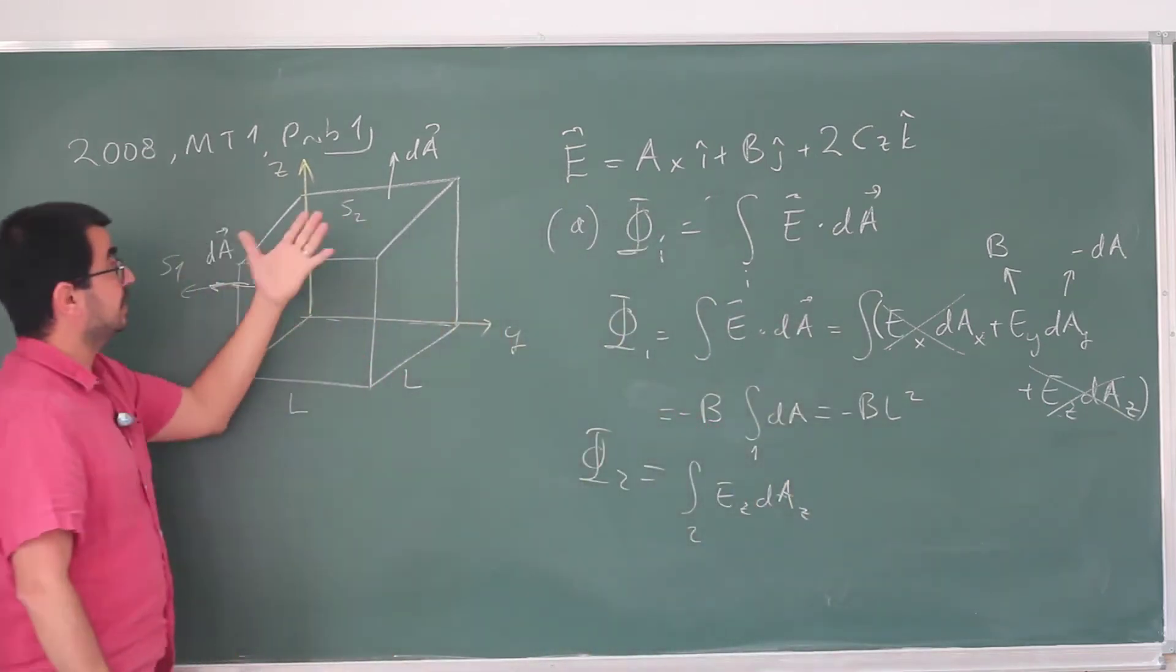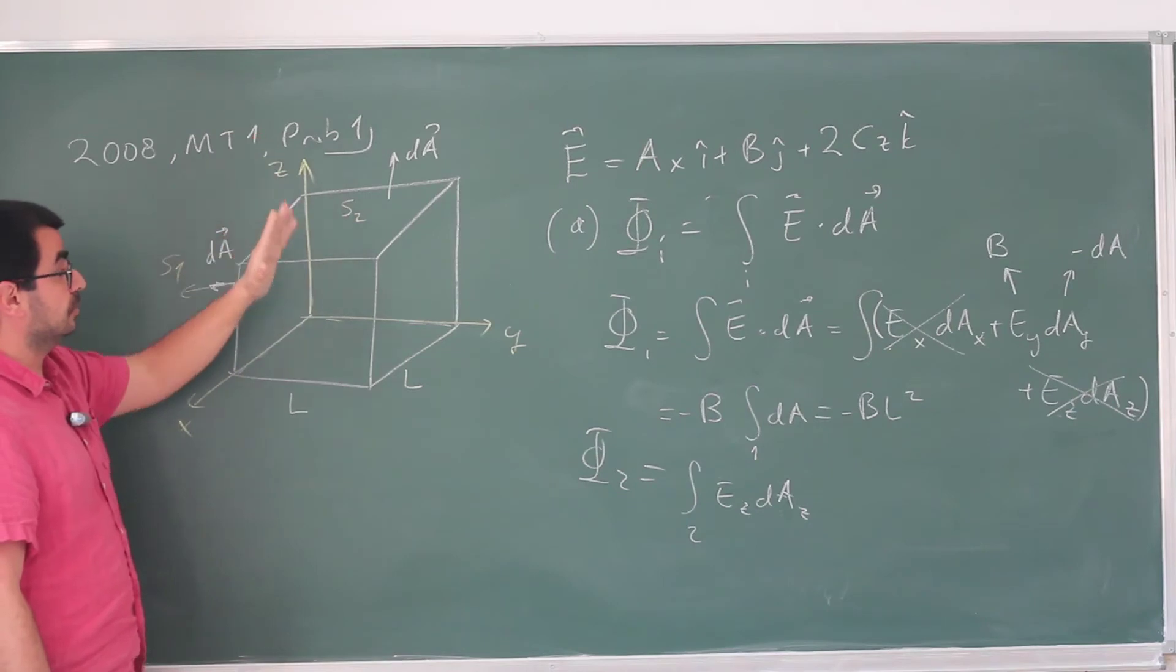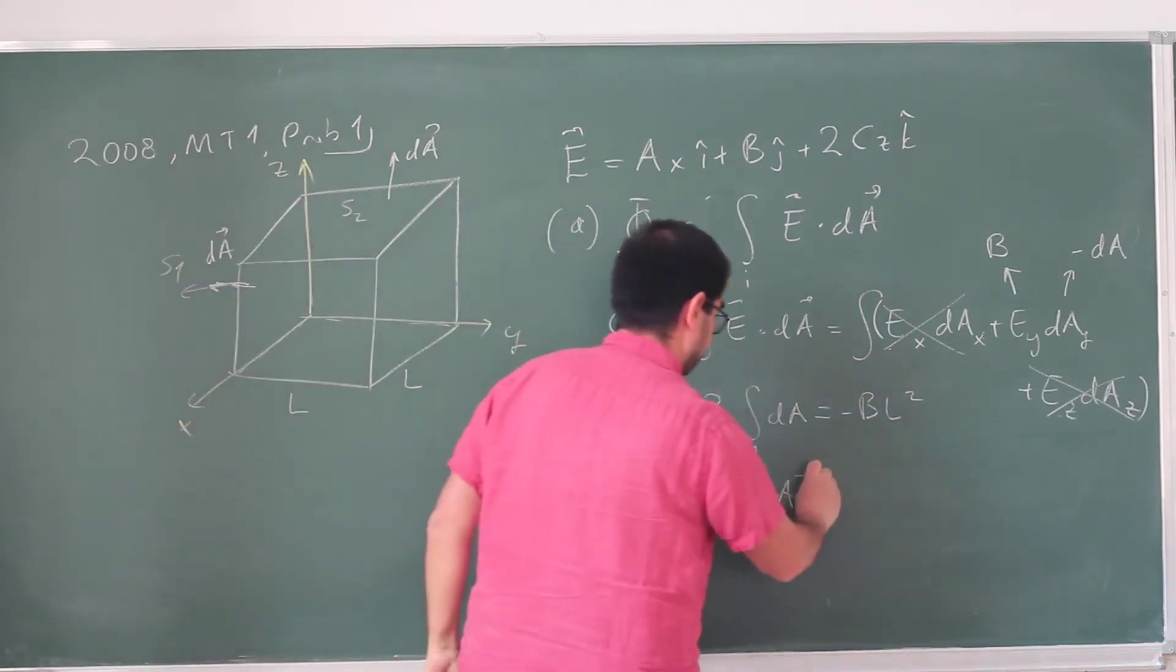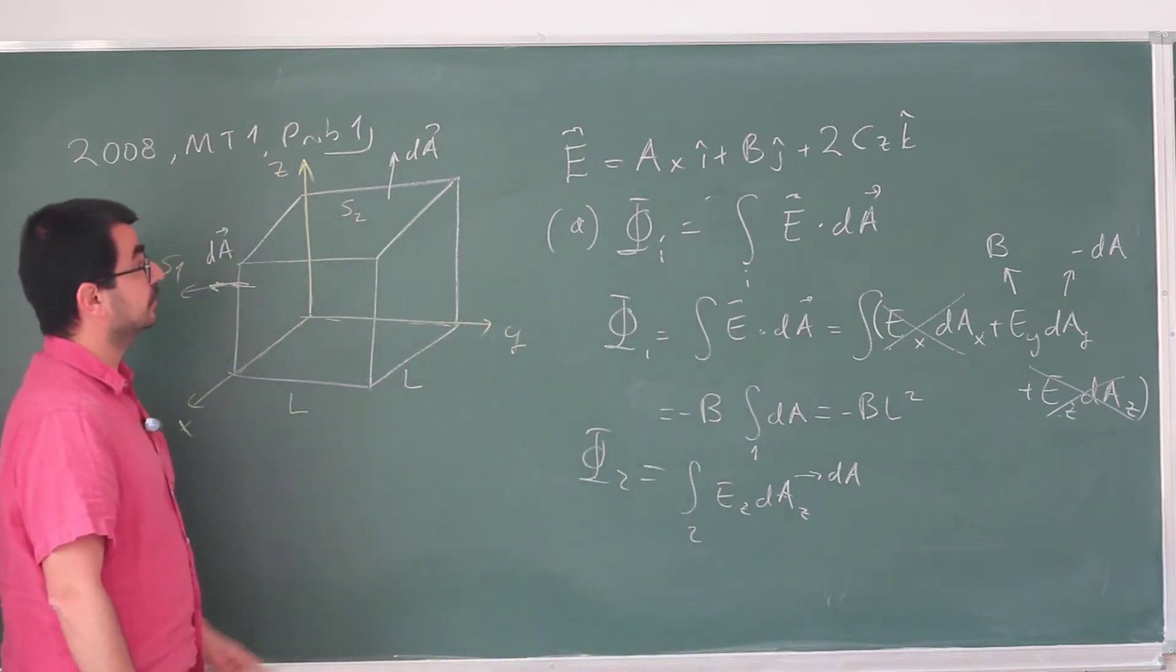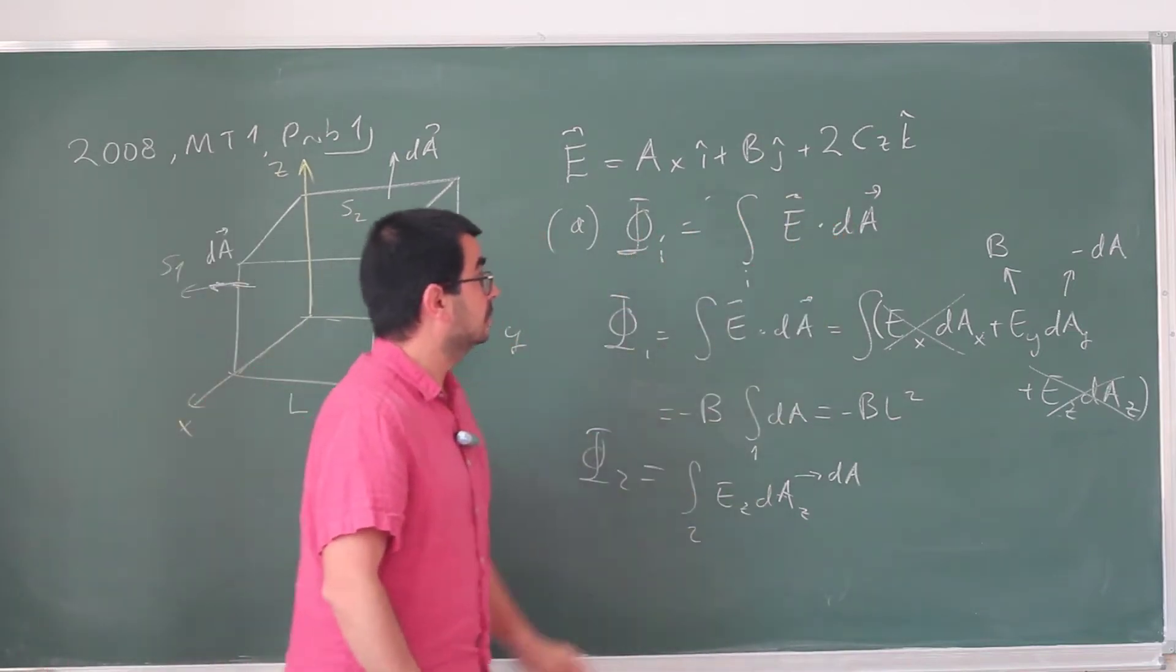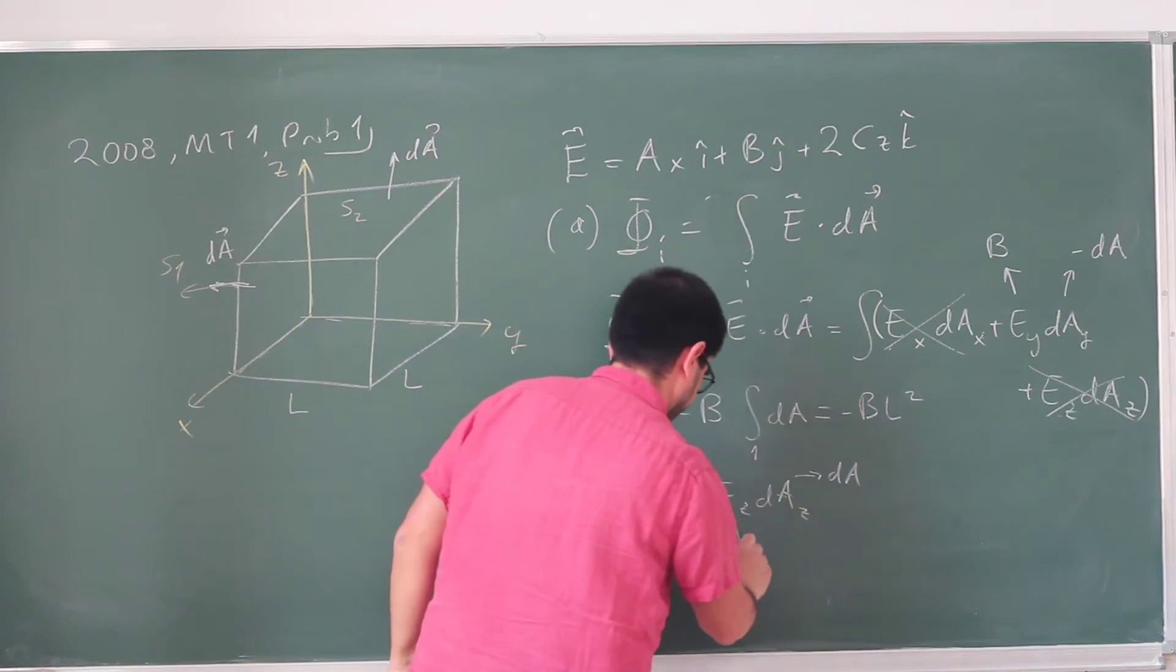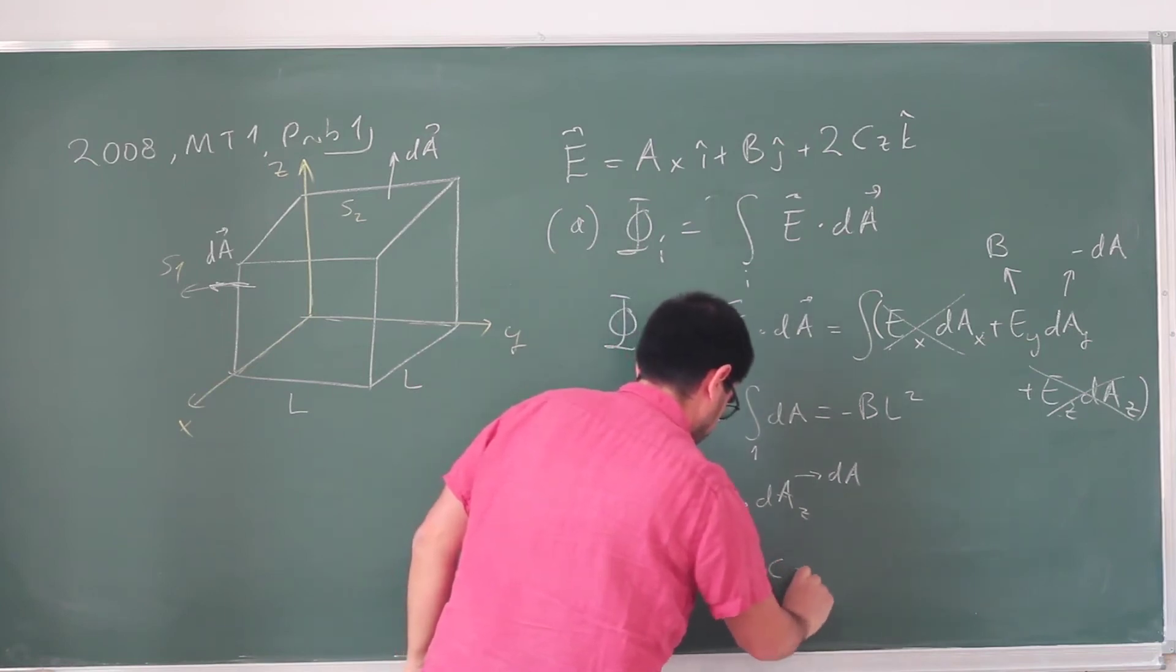If we write it that way, this is going to be over face two, Ez dAz. Now dAz is just dA. dA is in the positive direction, so this is just dA. And Ez, the z component of the electric field, is 2Cz.